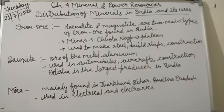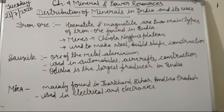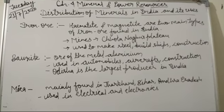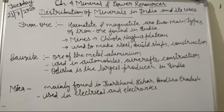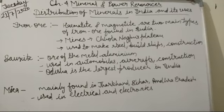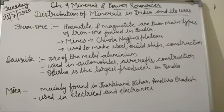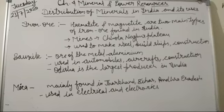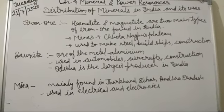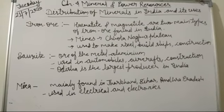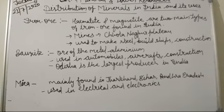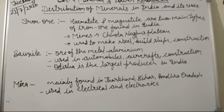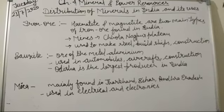Iron ore is found mainly in Jharkhand, Odisha, Chhattisgarh and Madhya Pradesh. It is mainly used to make steel, build ships and in the construction industries. There are also some considerable deposits of iron ore in Goa, Maharashtra and Karnataka in the south.